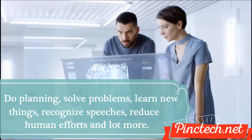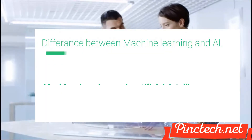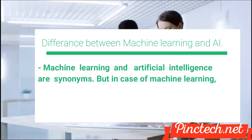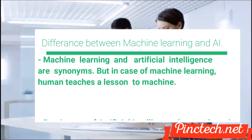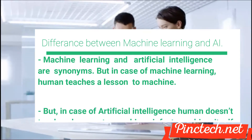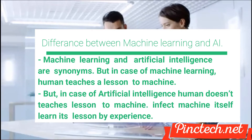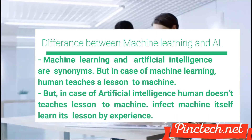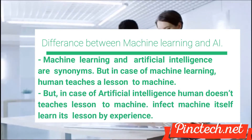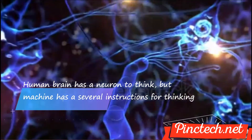Reduce human efforts and lots more. Machine learning and artificial intelligence are not exactly synonyms. In case of machine learning, humans teach a lesson to the machine. In case of artificial intelligence, humans don't teach their lesson to the machine — in fact, the machine itself learns its lesson by experience.